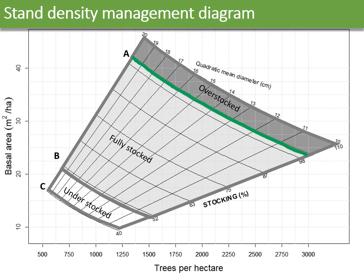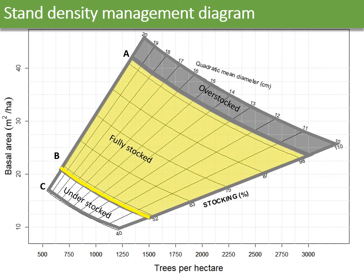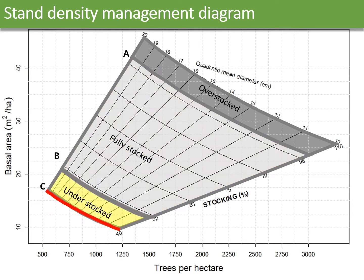The A line represents the maximum stocking where the stand fully utilizes the site potential. Above this line is the zone of competition and mortality — the overstocked zone. The B line is the lower limit of stocking required for full occupancy of the site. This is where trees face minimum competition; the crowns are fully developed and are just touching each other. This is the fully stocked zone. The C line refers to stands that are currently understocked.